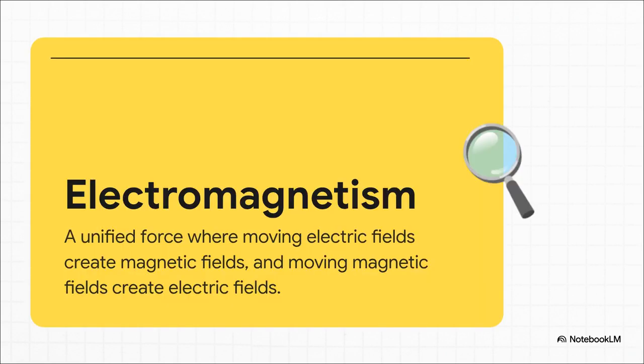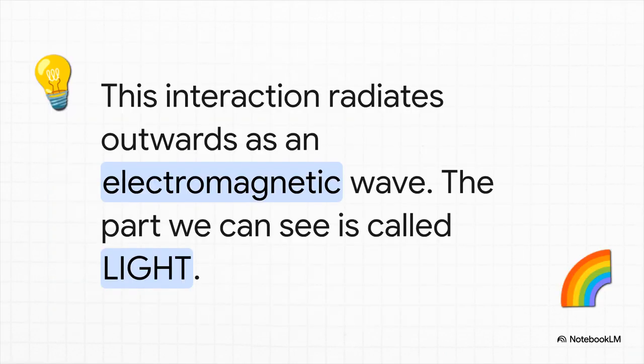All right, now let's talk about a different kind of hidden force. For a long time, we thought electricity and magnetism were totally separate. But it turns out, they're like two sides of the same coin. They're linked. If you get an electric field moving, you create a magnetic field. And if you get a magnetic field moving, you create an electric field. You see what's happening here? It's this endless chain reaction. One creates the other, which creates the first one again. And this whole thing just radiates outwards as a wave. An electromagnetic wave. And guess what we call the tiny part of that wave that our eyes can actually see? Light. The rest of it? Well, that's your radio, your microwaves, your Wi-Fi.